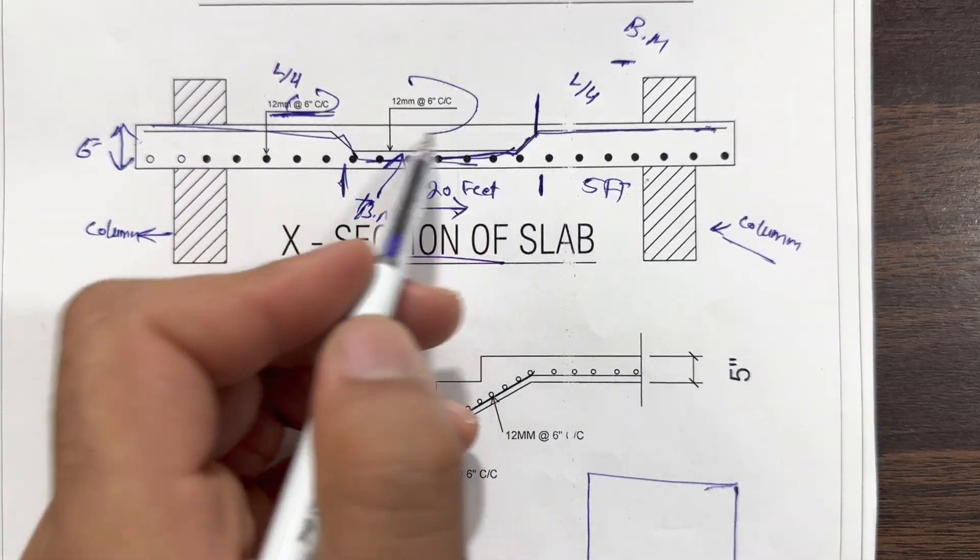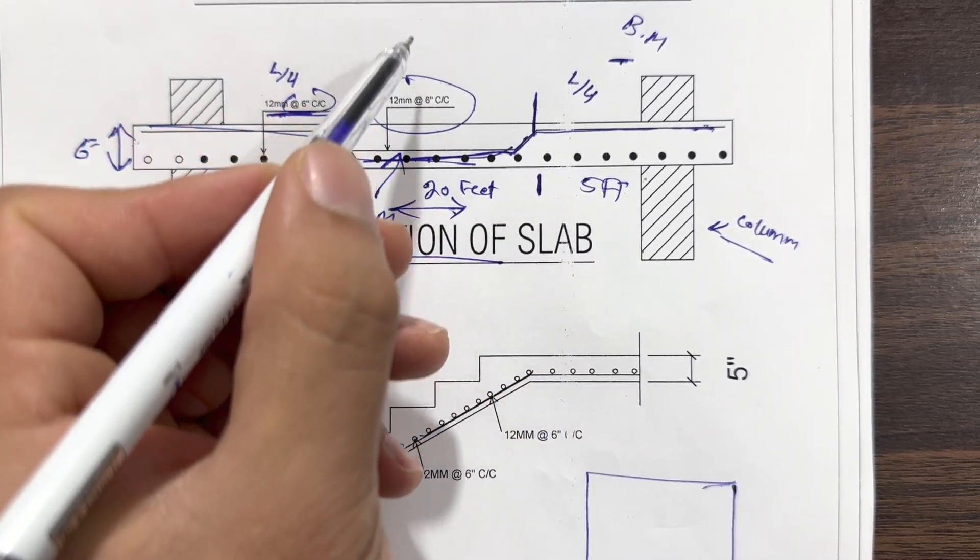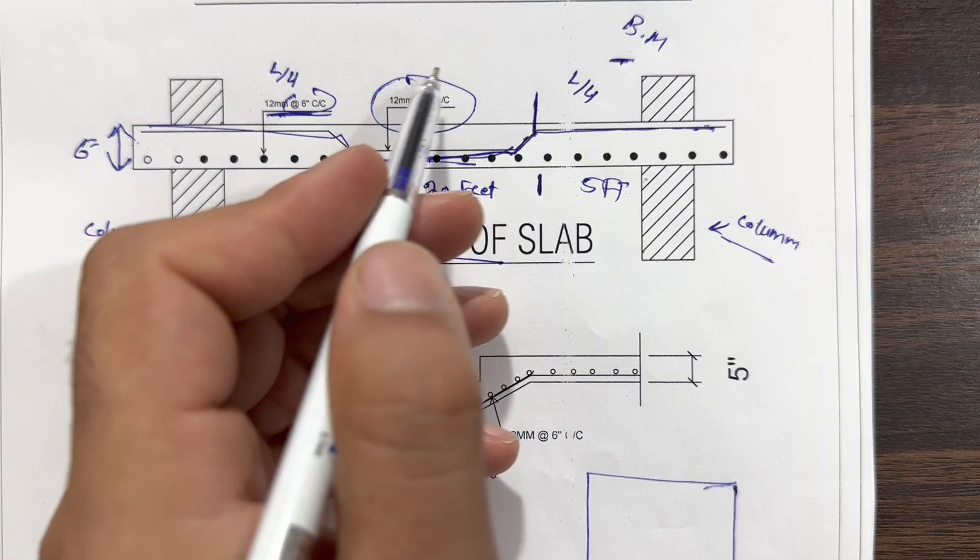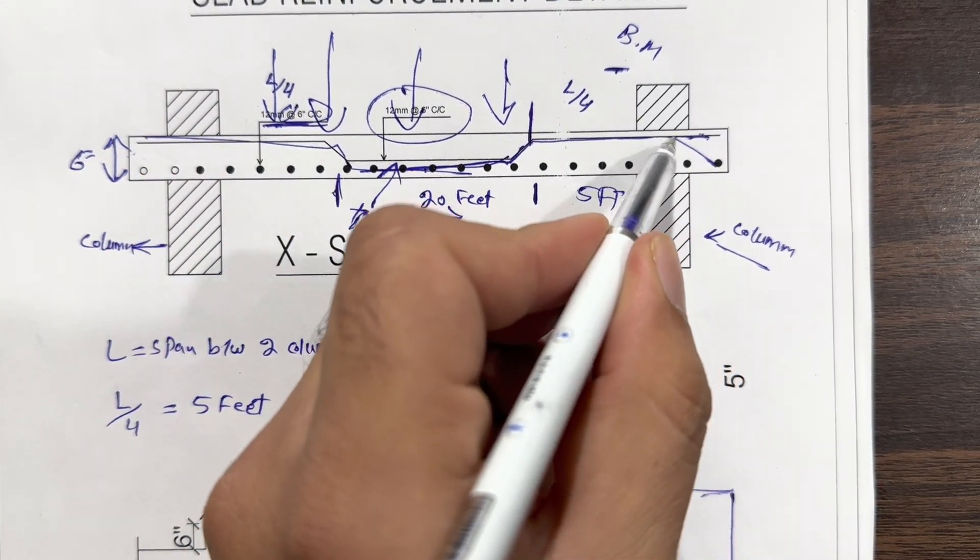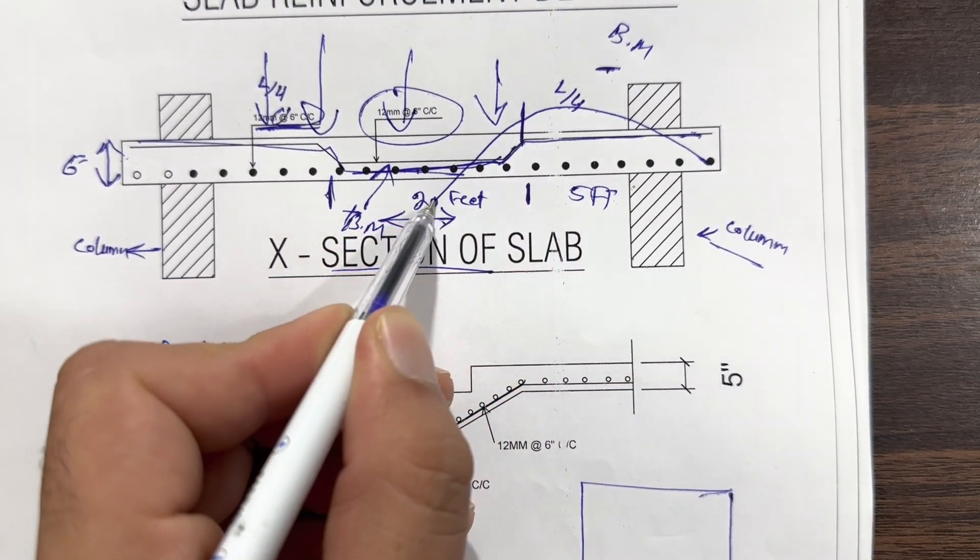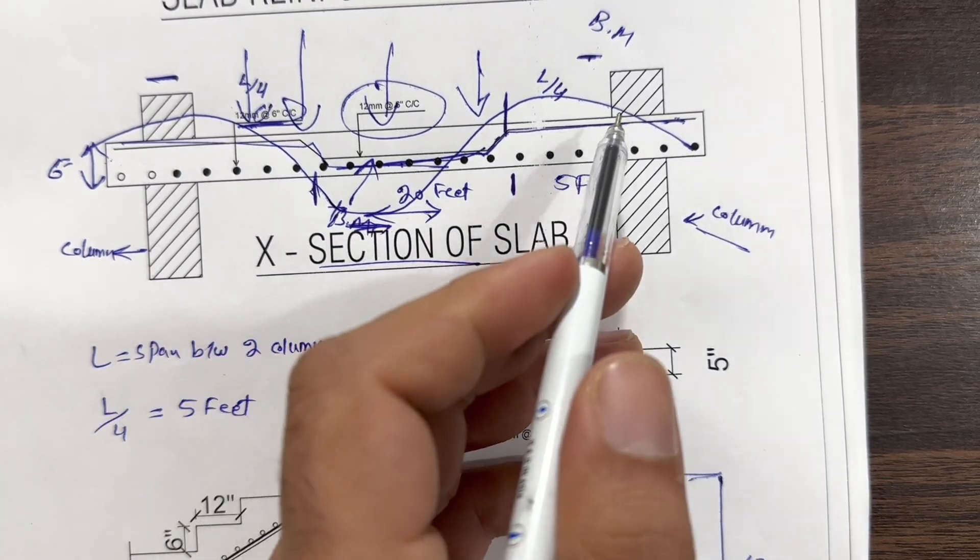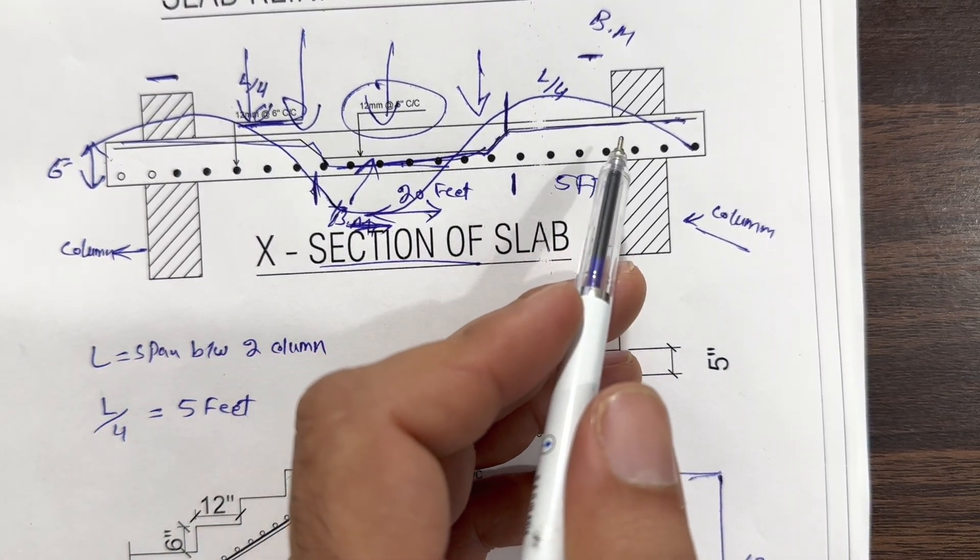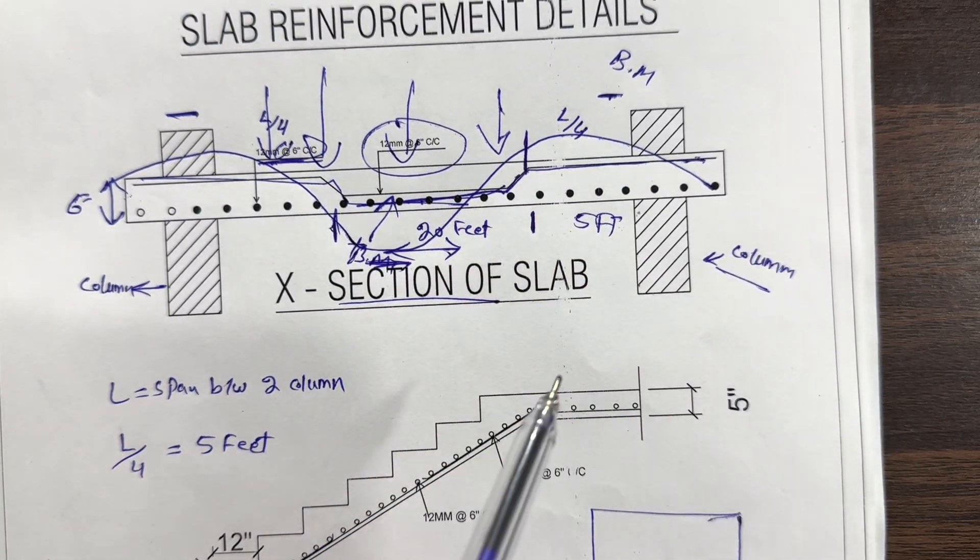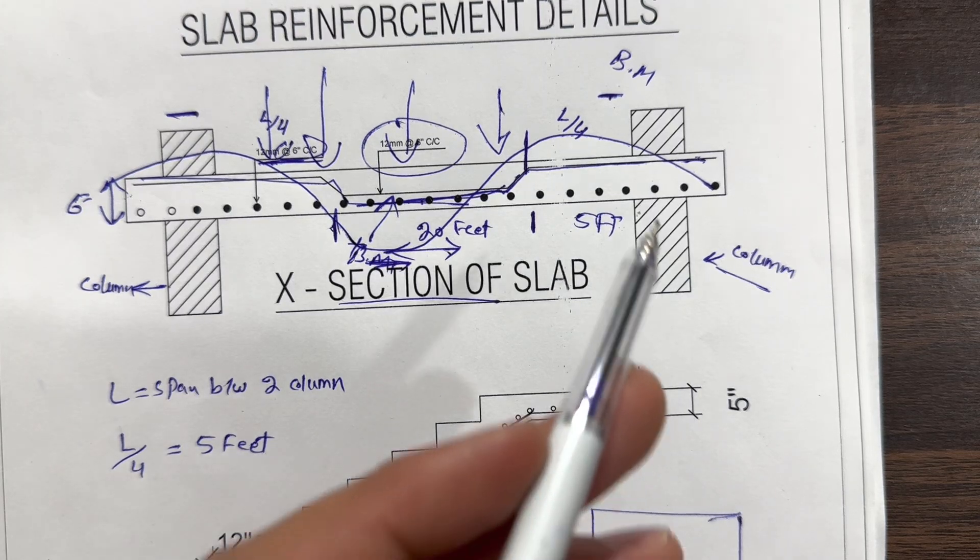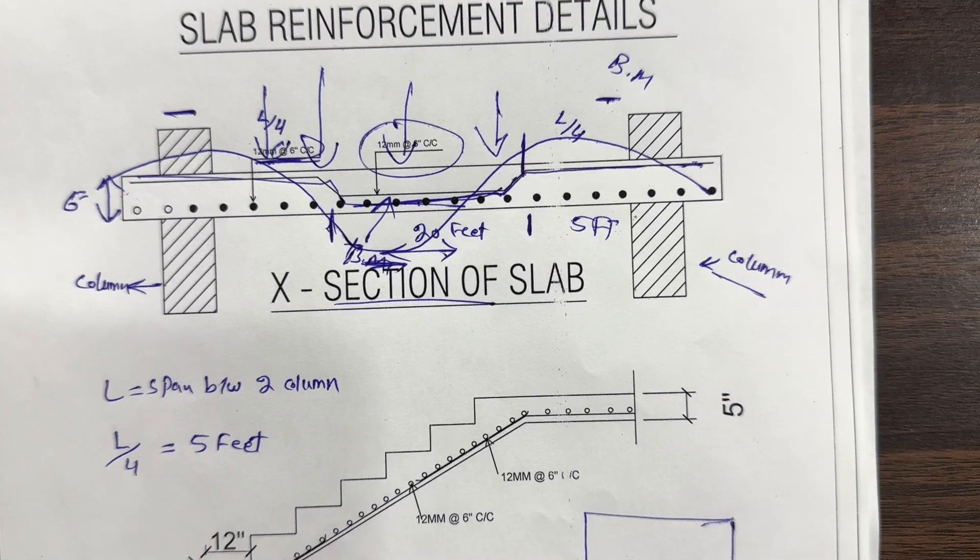Both the dia is 12 millimeter with the spacing of 6 inches. When the load comes on the top of this RCC slab, it makes a graph like this. Here we have negative bending moment, here we have positive bending moment. To resist negative bending moment or to resist cracks, there we have more chances of cracks near its support at the distance of L by 4 or L by 3. So we are providing extra steel rods or crank bar or bent up bar. This is the drawing for RCC slab.